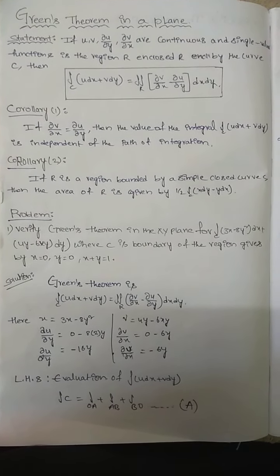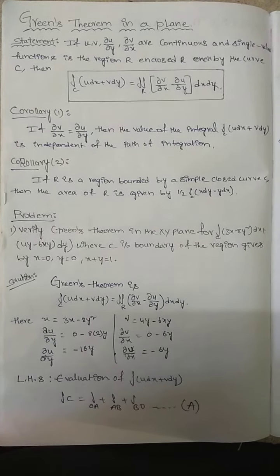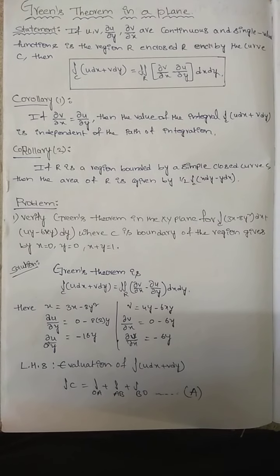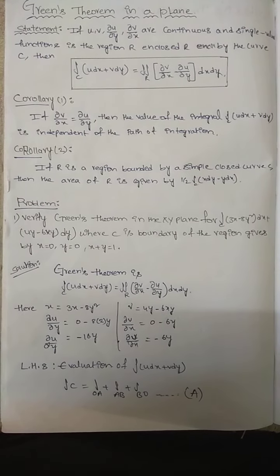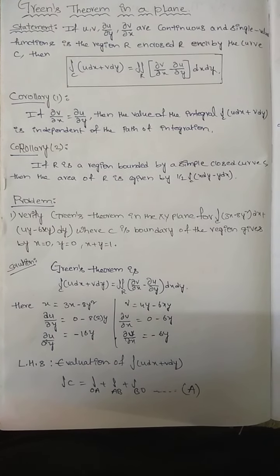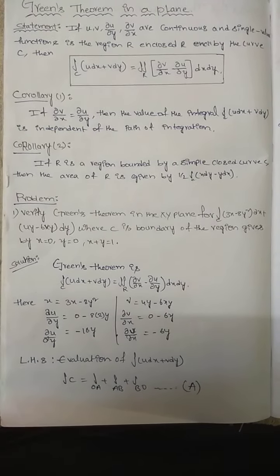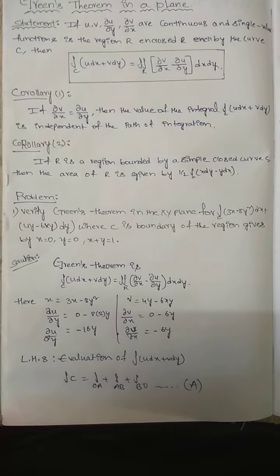Taking LHS, evaluation of integral C (u dx + v dy): integral C = integral OA + integral AB + integral BO. We assume that C = OA + AB + BO.